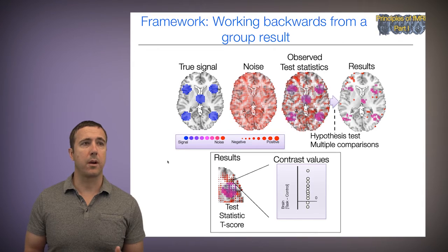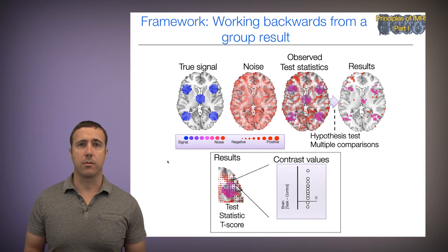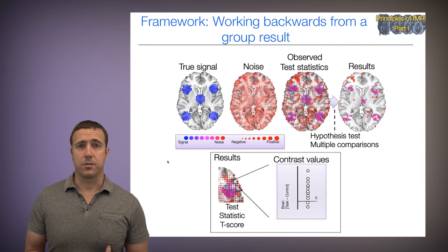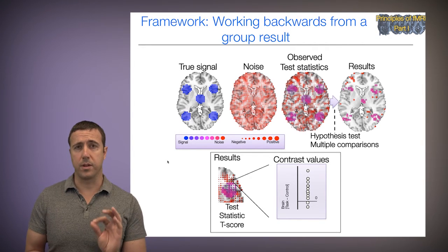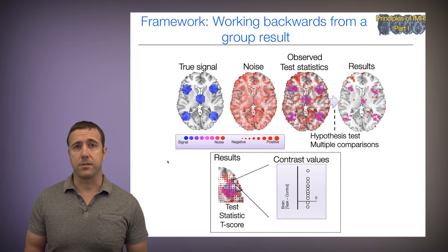Working backwards again from the results at one voxel in a group analysis, the most basic kind of group result is contrast values between task and control, where each dot here is a score from one subject. I'm interested in whether those scores, those contrast values, are significantly different from zero in the group.